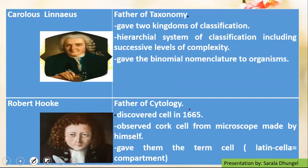How can we forget about Carlos Linnaeus, who propounded the binomial system of nomenclature. He is considered as the father of taxonomy. He had actually given a two kingdom system of classification and classified the organisms in a hierarchical system. Binomial nomenclature means the system of giving two names to an organism. The first name is considered as the generic name and the second name is considered as the specific name.